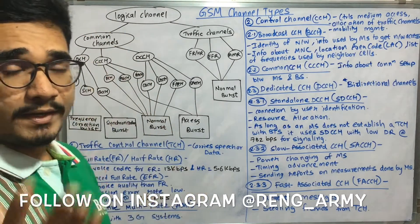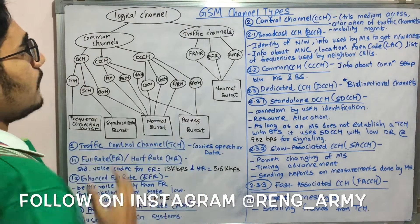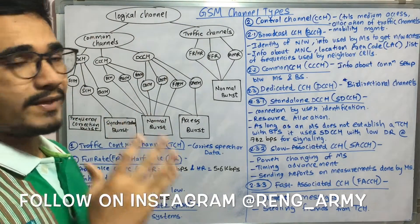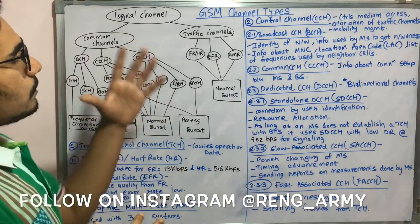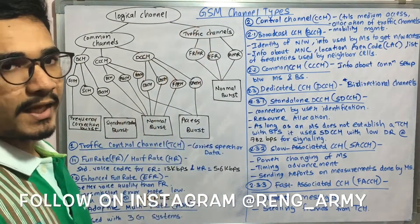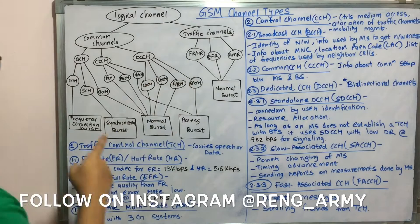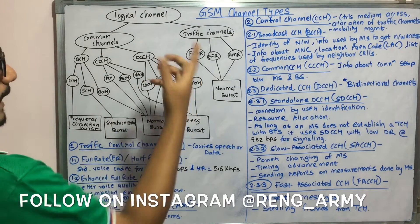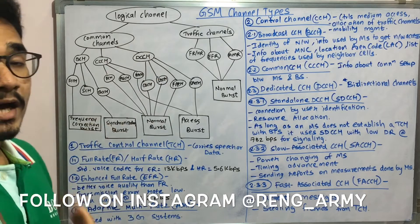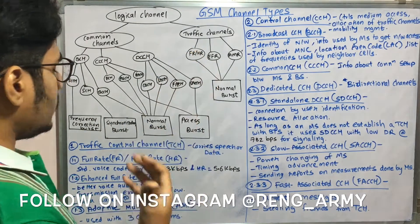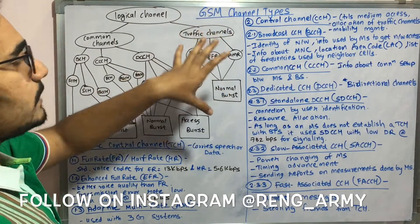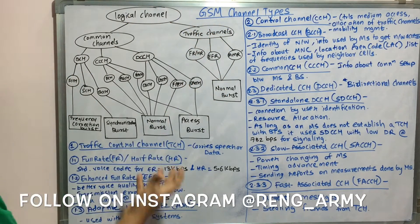The logical channel is divided into two branches: traffic channels on the right, and common channels on the left. Traffic channels have three different types: FR (full rate) or HR (half rate), EFR (enhanced full rate), and AMR (adaptive multi-rate).